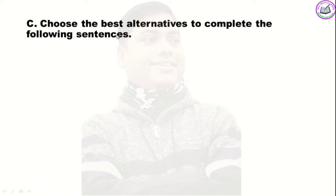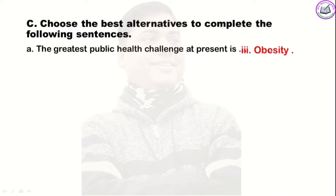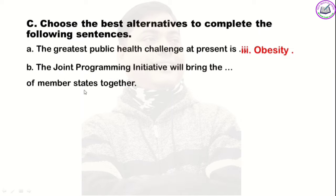Now choose the best alternative to complete the following sentences. We have four alternatives for each sentence. First: 'The greatest public health challenge at present is _____.'' The answer is 'obesity' — meaning getting fat.